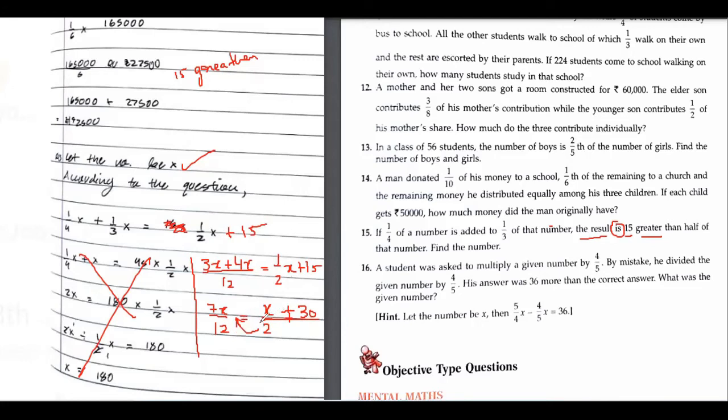Now what we can do? I can just shift 2 to the other side so that it gets cancelled by 12, so that it saves our time. 7 upon 12 multiplied by 2 equals to x plus 30. Is it making sense? Yes.